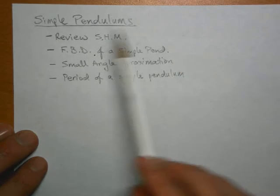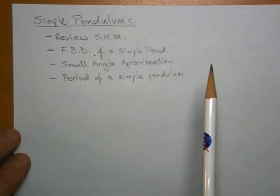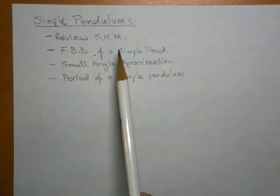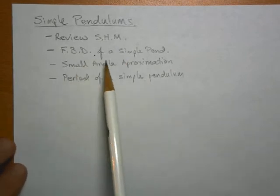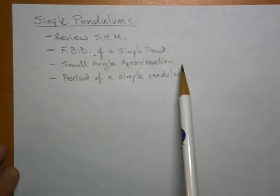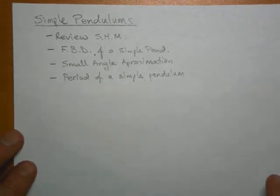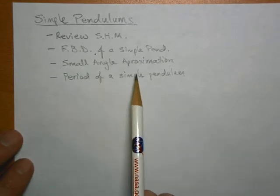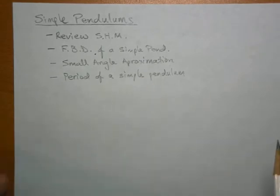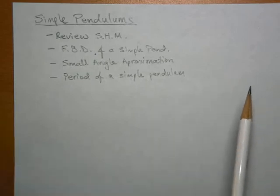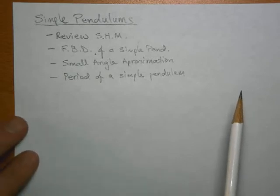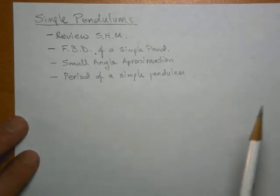Let's talk about simple pendulums. First let's review what simple harmonic motion is all about, then we'll draw a free body diagram of a simple pendulum and from that we're going to get an equation that almost looks like the equation for simple harmonic motion. We're going to use a little trick called the small angle approximation to turn that force equation into simple harmonic motion, and then we'll figure out how to calculate the period of the simple pendulum.